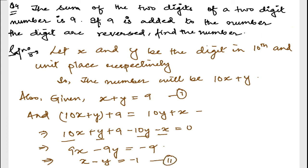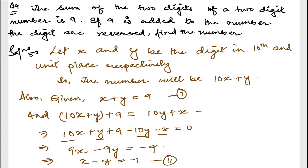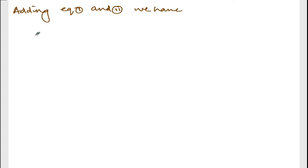Let me add equation number 1 and 2. So adding equations 1 and 2, we have: x plus y equals 9, and x minus y equals minus 1. If you add, y is cancelled. x plus x, 2x is equal to 9 minus 1, which is 8. So x is equal to 8 divided by 2, which is 4.